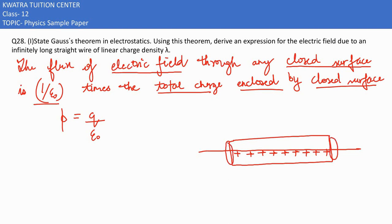We take three points on the cylinder: point P, point Q, and point R. At point P, the electric field moves outward to the left side. For R it goes away from the positive charge, and for Q it is in the upward direction. Now we find dS — for the left side surface at P, dS points to the left, so the angle between E and dS is 90 degrees.